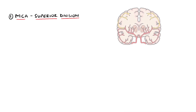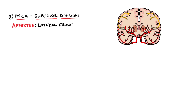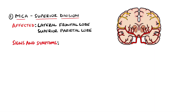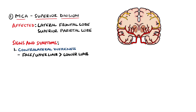Our first syndrome results from a stroke affecting the middle cerebral artery superior division, which normally supplies the lateral frontal lobe and the superior parietal lobes. Findings include contralateral weakness of the upper and lower limbs and weakness of the contralateral lower face, with a greater effect seen on the face and upper limb rather than the lower limb.